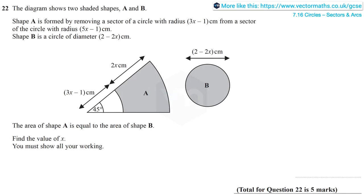In question 22, we are told we have a diagram with two shaded shapes A and B. Shape A is formed by removing a sector of a circle with radius 3x minus 1 from a sector of the circle with radius 5x minus 1. Also, shape B is a circle of diameter 2 minus 2x. We are also told that the area of shape A is equal to the area of shape B, and we need to find the value of x.